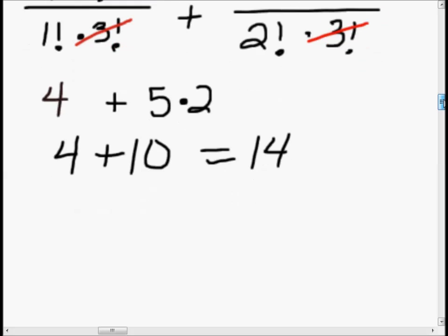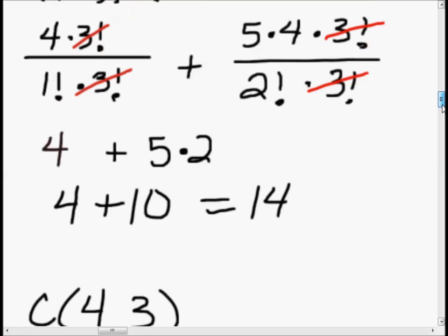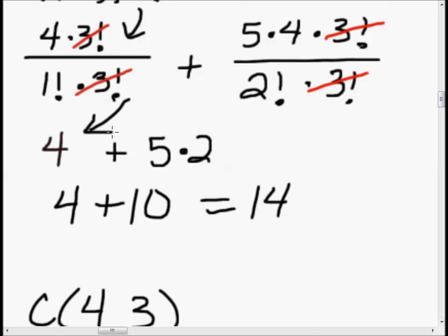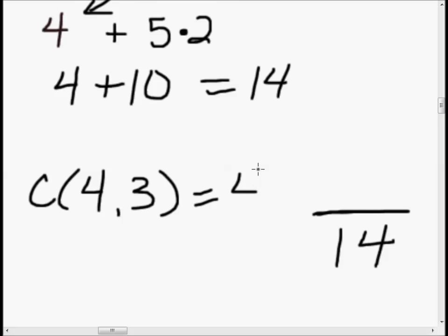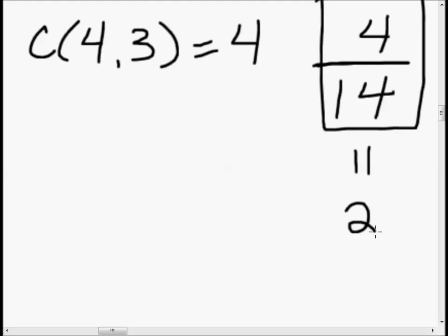That's the denominator of our probability. Now for the numerator: we need to know how many ways all three people on the committee could be men, given the same-sex constraint. That's combination four choose three. We already computed that — it's four. So our answer is four over fourteen, which simplifies to two over seven.